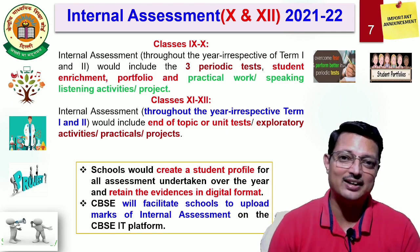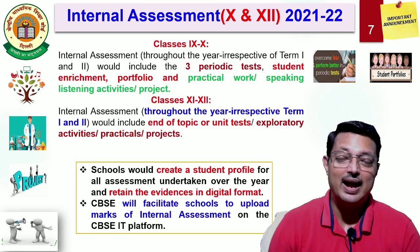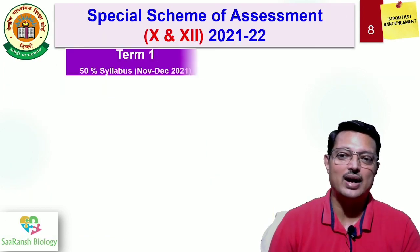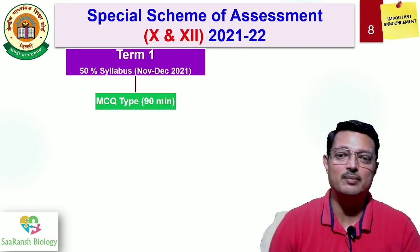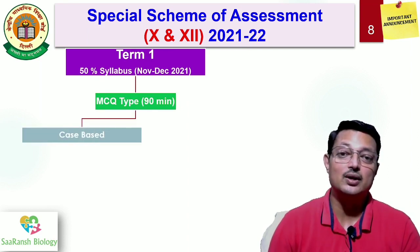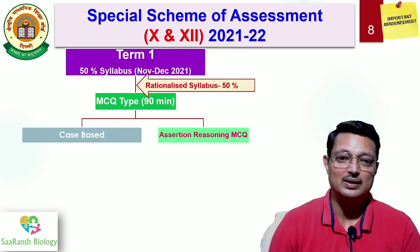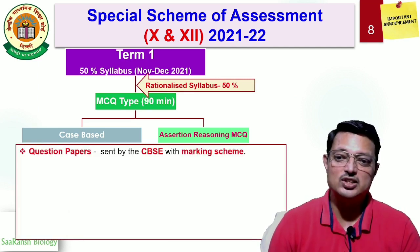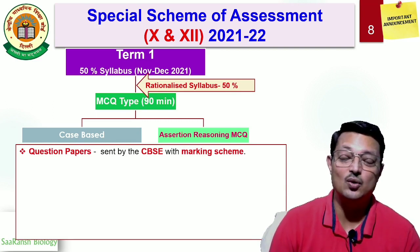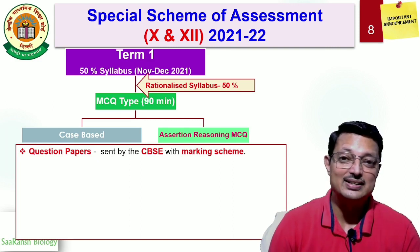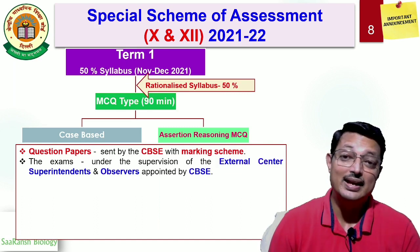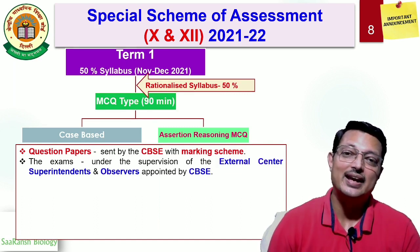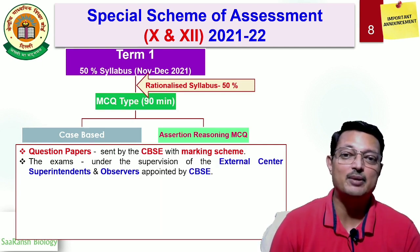Teachers may plan their activities accordingly. A detailed circular, guidelines, and sample material will be shared soon along with the rationalized syllabus. For term 1, the MCQ-type questions will include case-based and reasoning-based MCQs covering 50% of the syllabus. The question paper will be sent by CBSE with a marking scheme for standardization. Examination will be under the supervision of an external center superintendent and observers duly appointed by CBSE.